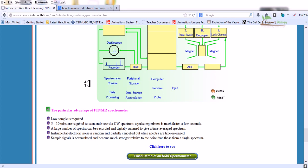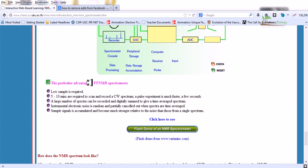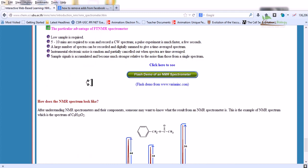The particular advantage of FTNMR spectrometer is that low sample is required. Second, 5 to 10 minutes are required to scan and record in traditional spectrophotometry, but a pulse experiment is much faster, just a few seconds. A large number of spectra can be recorded and digitally summed to give an average spectrum. Instrumental electronic noise is random and partially cancelled out with modern technologies. The sample signal is accumulated and becomes much stronger relative to the noise than a single spectrum.